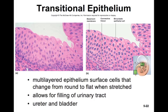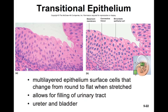Transitional epithelium is multi-layered epithelium whose surface cells change from round to flat when stretched. It can be difficult to identify in a histological preparation because the cells stretch as the bladder fills. When the bladder is empty, the cells may appear more round or cuboidal, but when the bladder is full, they become much flatter as the epithelial layer stretches out.